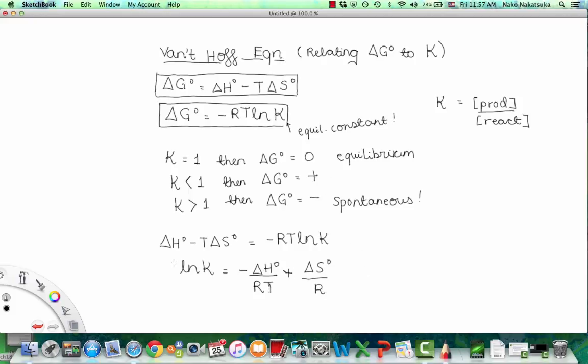And this equation is the Van't Hoff equation. And you can see the temperature dependence of the equilibrium constant, because temperature is right here. So the Van't Hoff equation can be also used to calculate the equilibrium constant at different temperatures, if the enthalpy value is known.